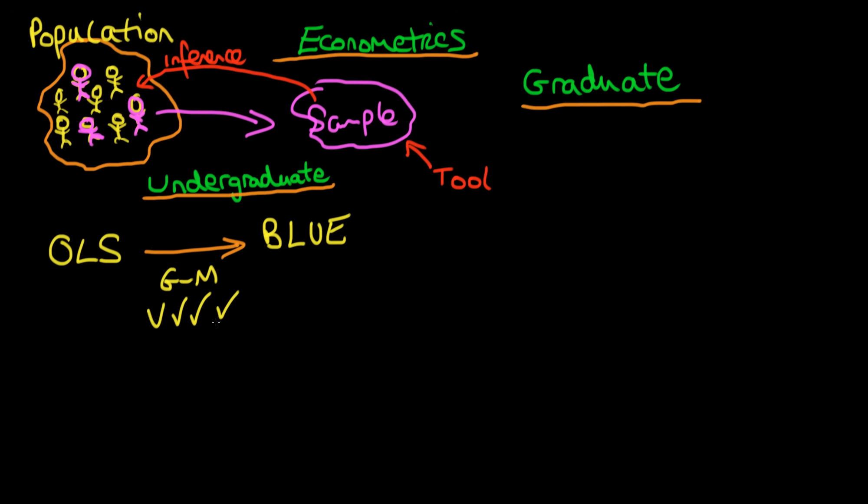The next thing we'll cover is how do we go about testing that each of these criteria are satisfied, so diagnostic tests. If these conditions aren't satisfied then ordinary least squares is no longer BLUE, so perhaps it's no longer a good tool to use on a sample to make some inference about what's going on in the population.